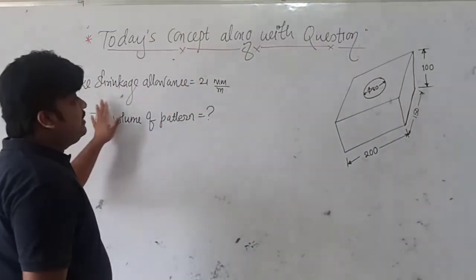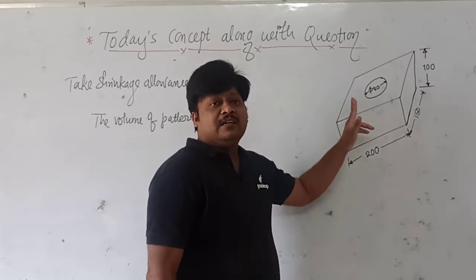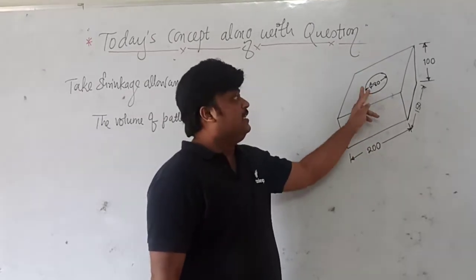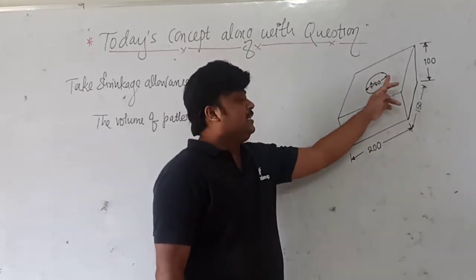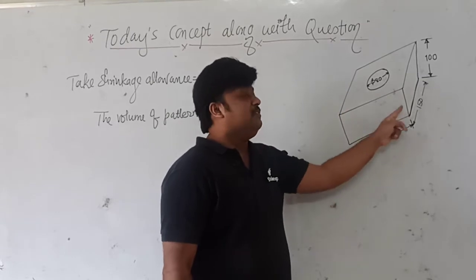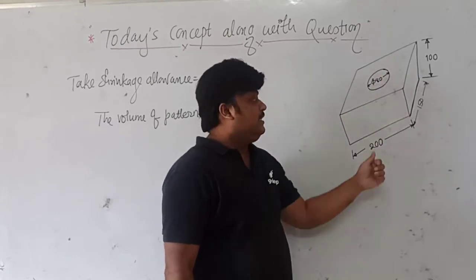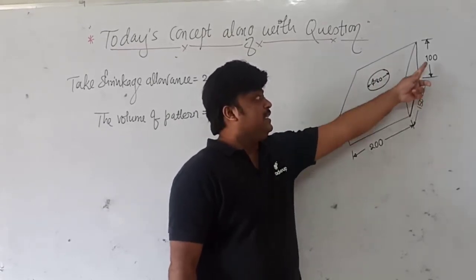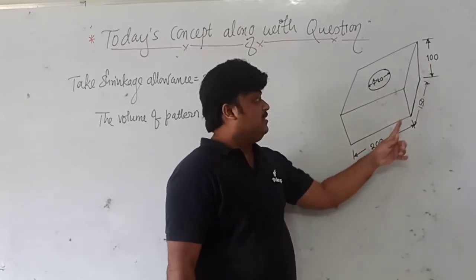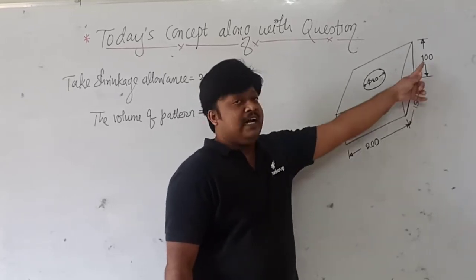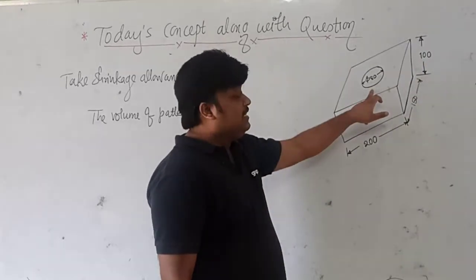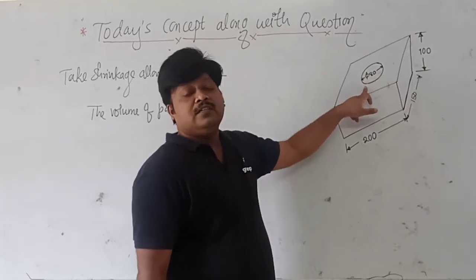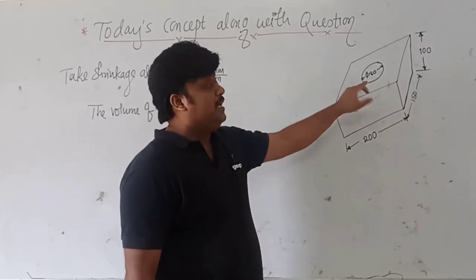Here a slab or block is given along with an internal hole. The dimensions are 200, 150, and 100 — that is the length, width, and height. And there is an internal bore of 80 mm diameter.